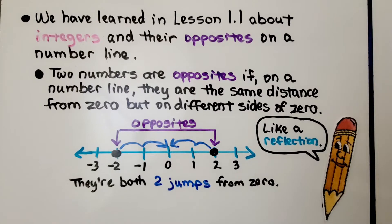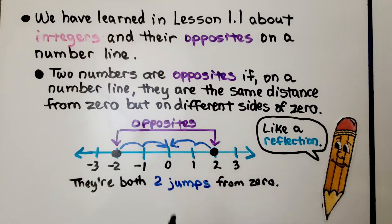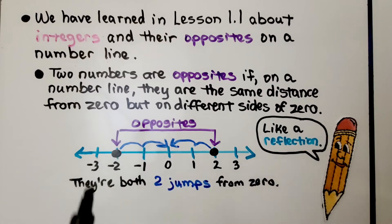We learned in lesson 1.1 about integers and their opposites on a number line. Two numbers are opposites if, on a number line, they are the same distance from zero but on different sides of zero. It's sort of like a reflection if zero was the line of reflection. We have negative two and positive two — they're opposites, both two jumps from zero.